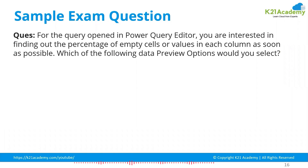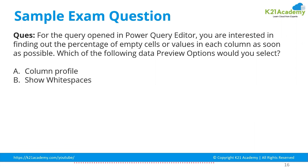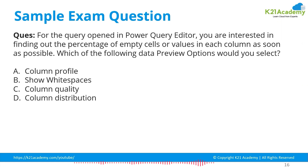The question asks: which data preview option would you select — Column Profiling, Show White Spaces, Column Quality, or Column Distribution? The correct answer is C — Column Quality — which shows the percentage of empty, valid, and error values for each column.